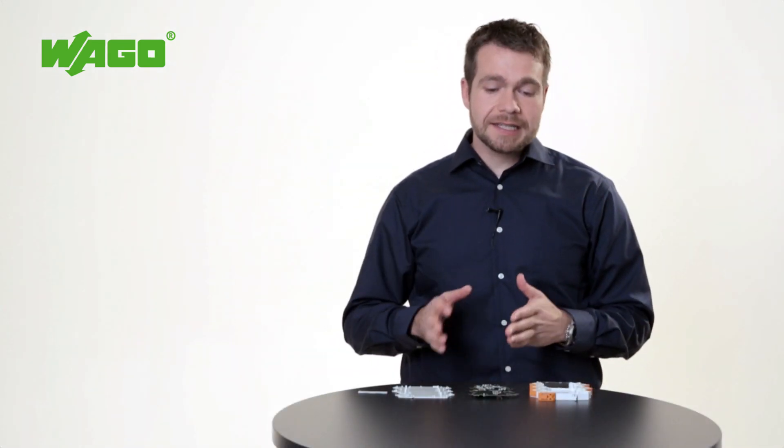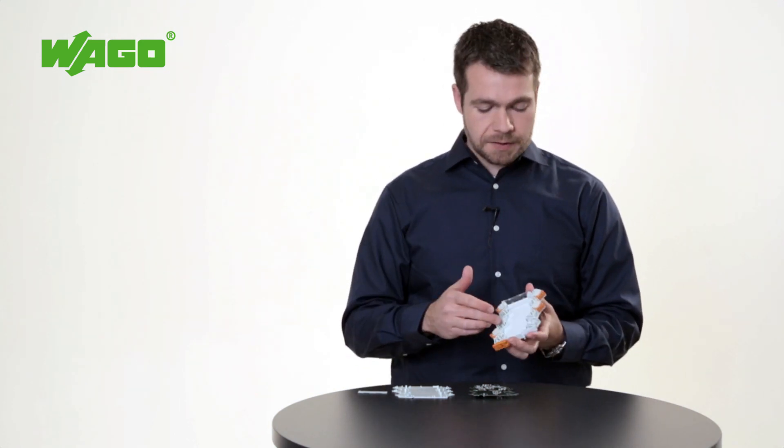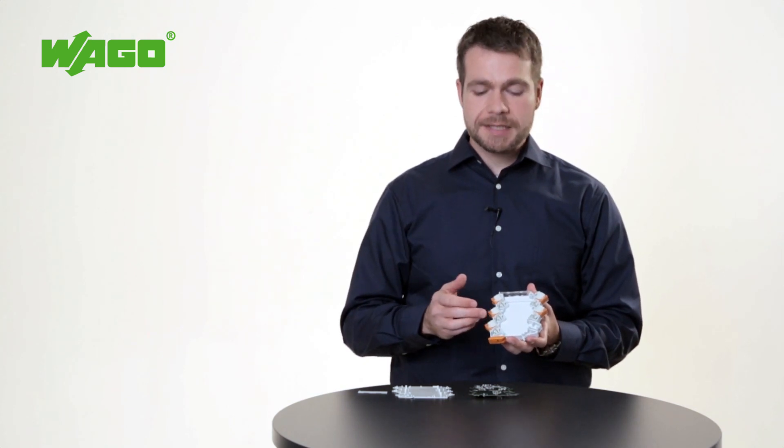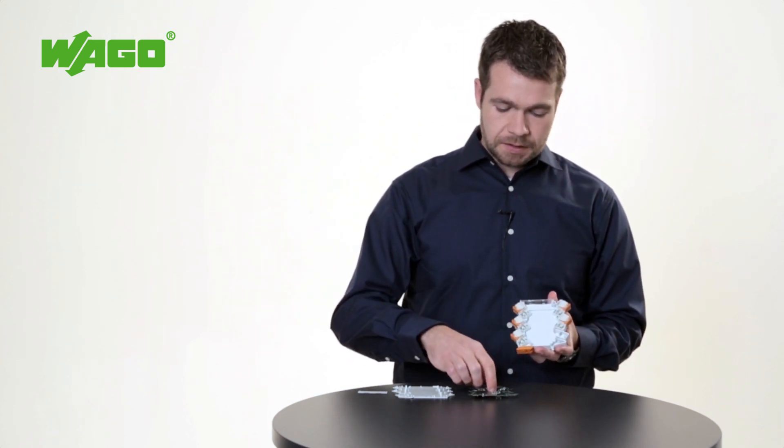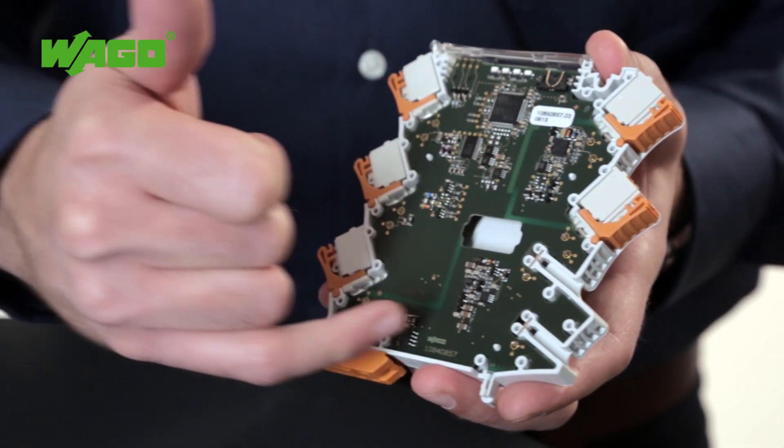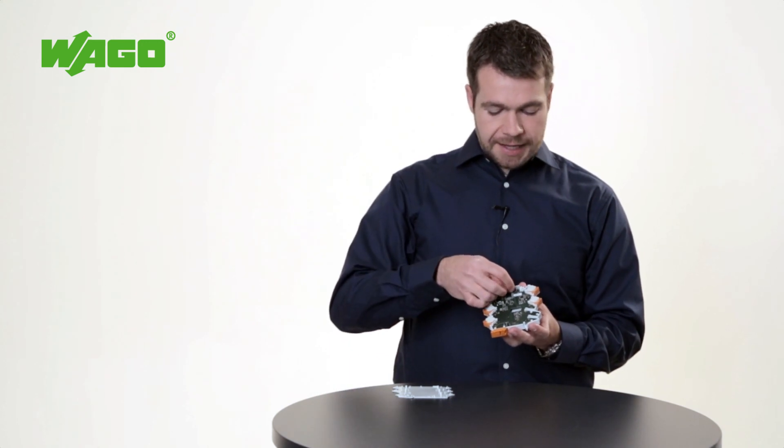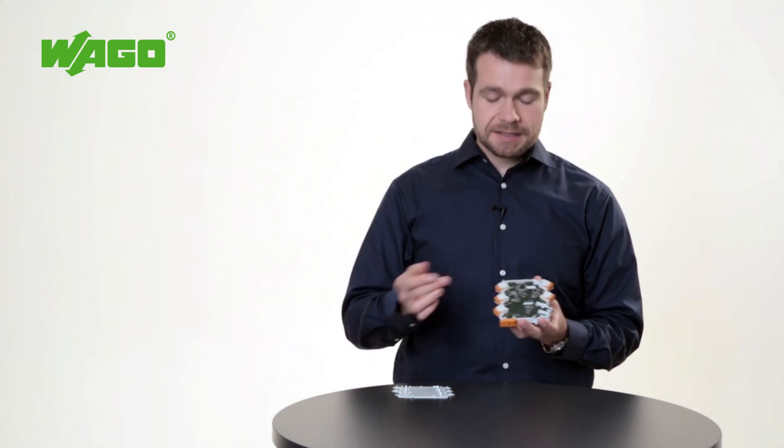Last but not least, I'd like to show you how easy it is to integrate your solution into our housing. You only need to order one housing in the size you require, including your personally selected connection options. You place your circuit board into our housing and then solder it at the appropriate points. The optional cover plate can also be integrated into the housing.